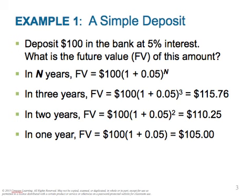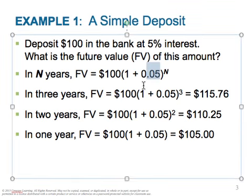Let's work an example of a simple deposit situation. Let's say we deposit $100 in the bank at 5% interest. What is the future value of this amount? In N years, the future value equals $100 times (1 + 0.05) to the power of N. You're adding 5% interest and factoring in compounding. So every year you're getting 5%, and over 30 years — with N equal to 30 — it's exponential.